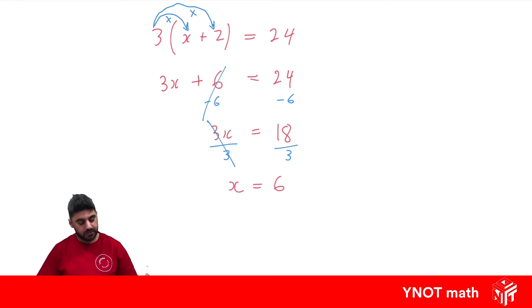You can always double check: if x is 6, then 6 plus 2 is 8, and 3 times 8 is 24. Correct.